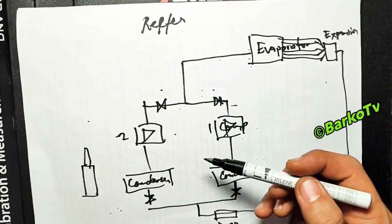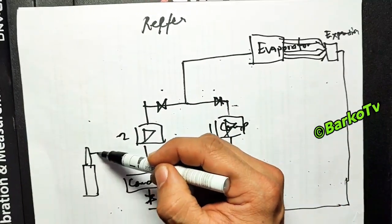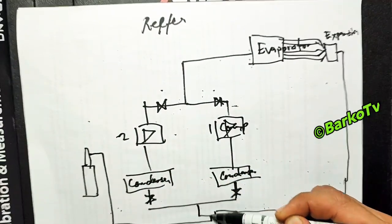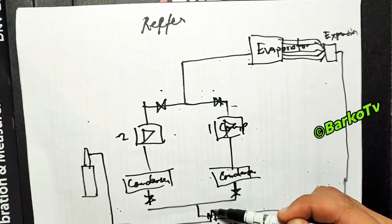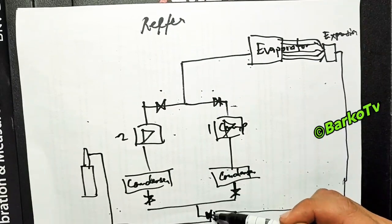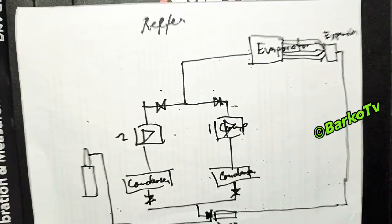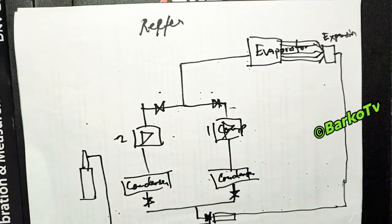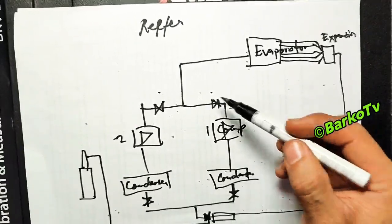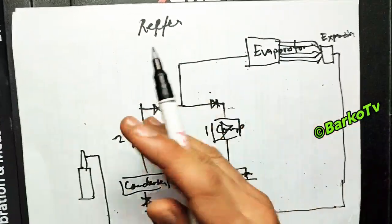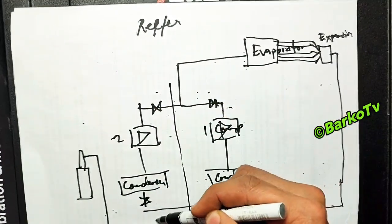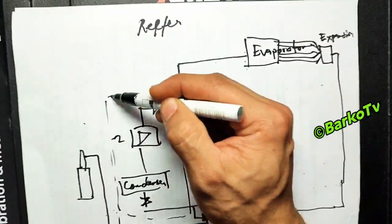This is the bottle - we need to charge on the liquid line. This is a charging bottle. The first thing to do when you charge refrigerant using a bottle is to isolate this one.